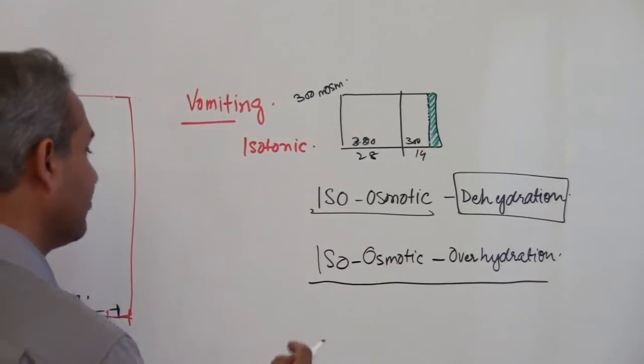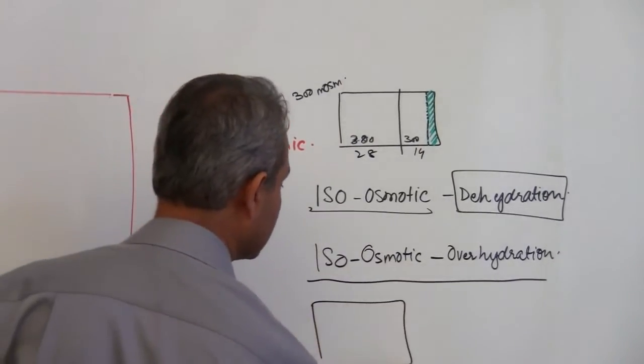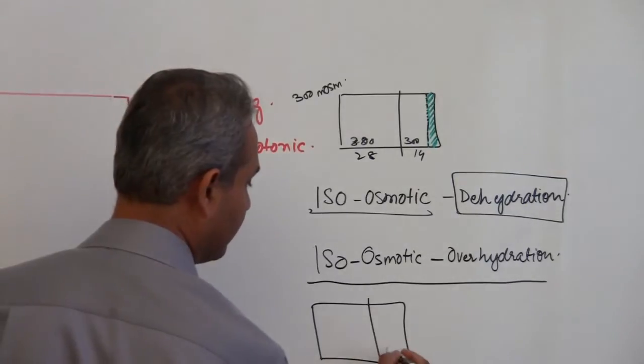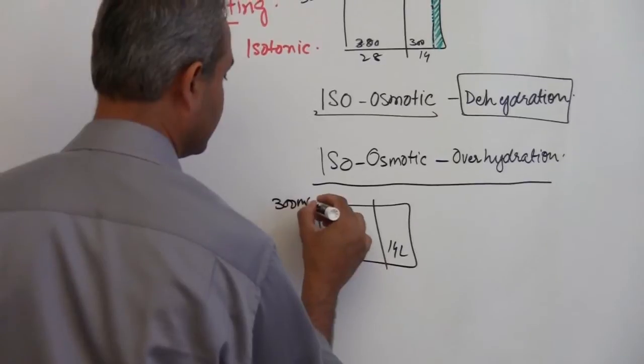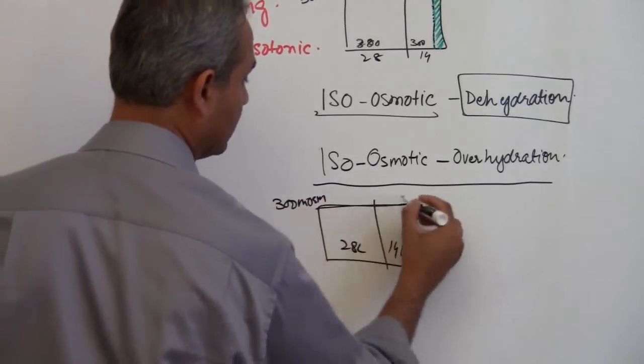If I draw the diagram for him, let's say this is a solid line. This is 14 liters, 28 liters. 300 milliosmoles is the osmolarity.